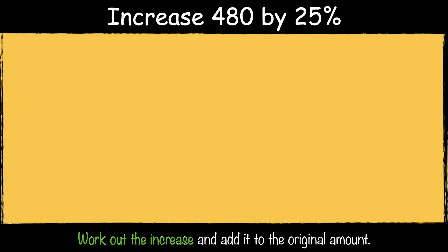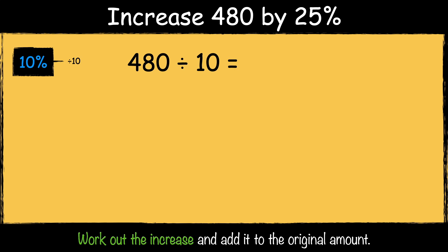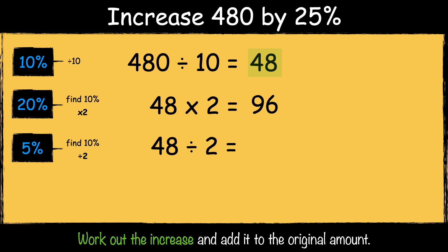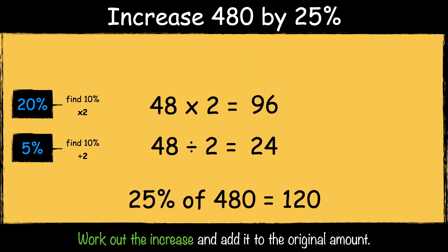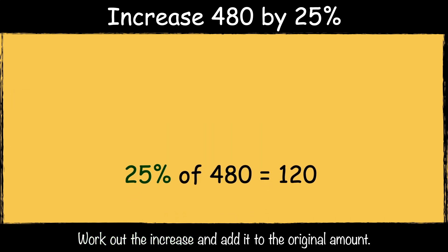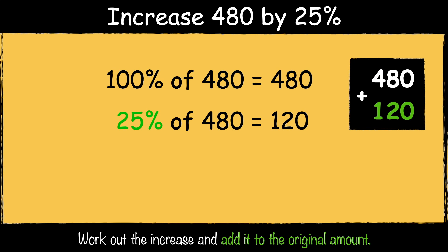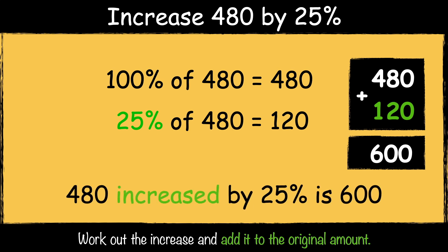Here's the next example: increase 480 by 25%. First we find 10% of 480 by dividing it by 10. 480 divided by 10 is 48. Then we multiply the answer by 2 to find 20%. 48 times 2 is 96. Then if we divide the 10% answer by 2 we can find 5%. 48 divided by 2 is 24. So 25% of 480 is 120. The next step is to add it to the original amount, so 480 add 120 is 600. So 480 increased by 25% is 600.